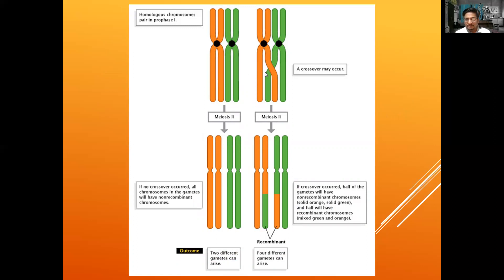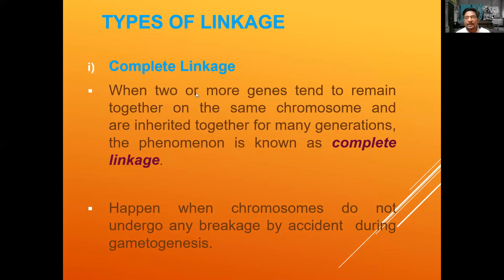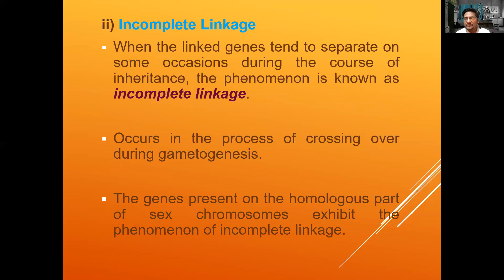During meiosis, the homologous chromosomes undergo crossing over — this may be a single crossover or more. The arm exchange happens during prophase I of meiosis I. There are two kinds of linkage: complete linkage, when genes are very closely located; and incomplete linkage, when the distance is a bit more. The recombination frequency can vary from one percent to fifty percent — it cannot exceed fifty percent because only one of the two strands of each homologous chromosome exchanges arms.